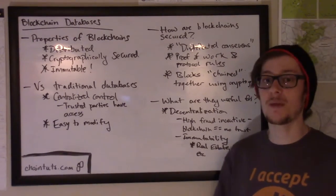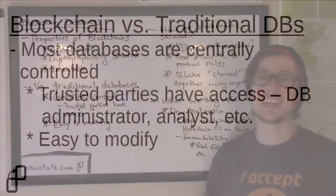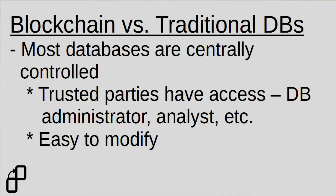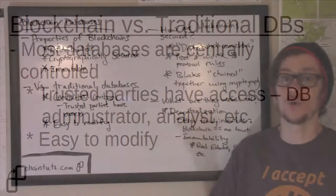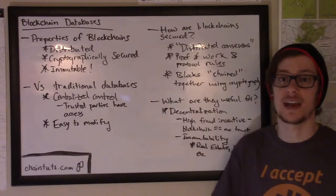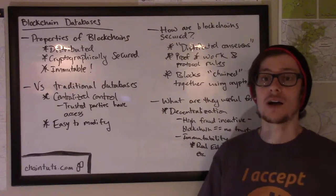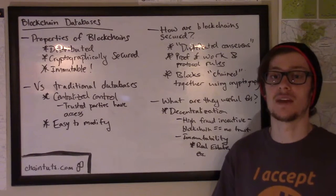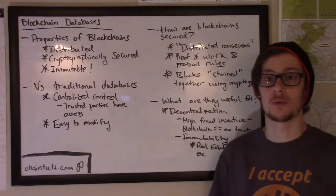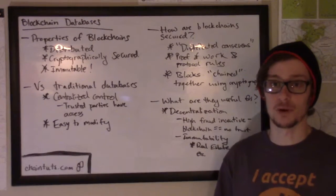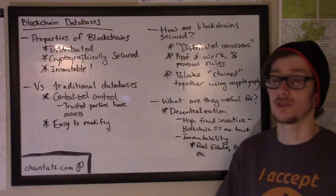Traditional databases are also generally easy to modify. If you have a MySQL database running on your web store, for example, it's really easy to delete old customer accounts or add new transactions that occur on the site every day. By contrast, blockchain databases make it so that historical data is very hard to modify or remove, if not impossible to do so.